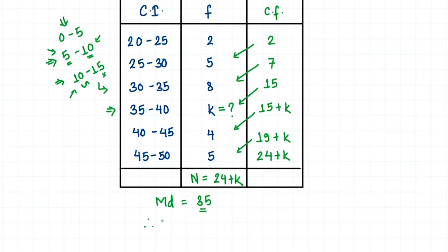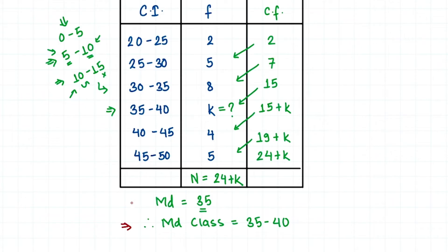So our median class is 35 to 40. We have identified the median class without needing to find the position of the median. Now what we are going to do is find the median from the data using the formula, and then compare it with the given median of 35 to find the value of k.